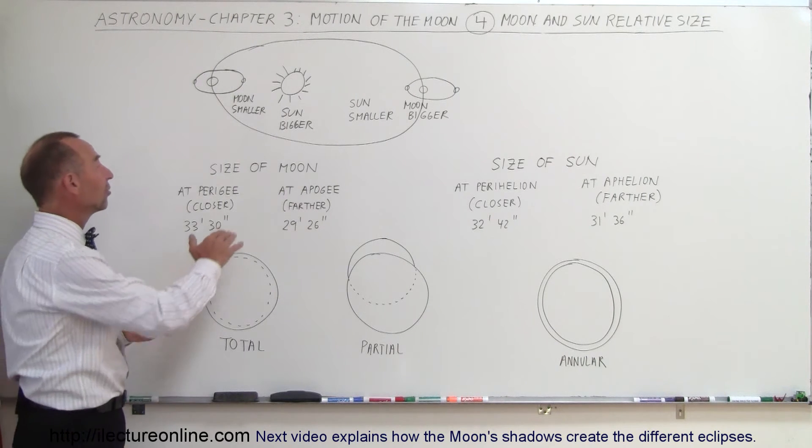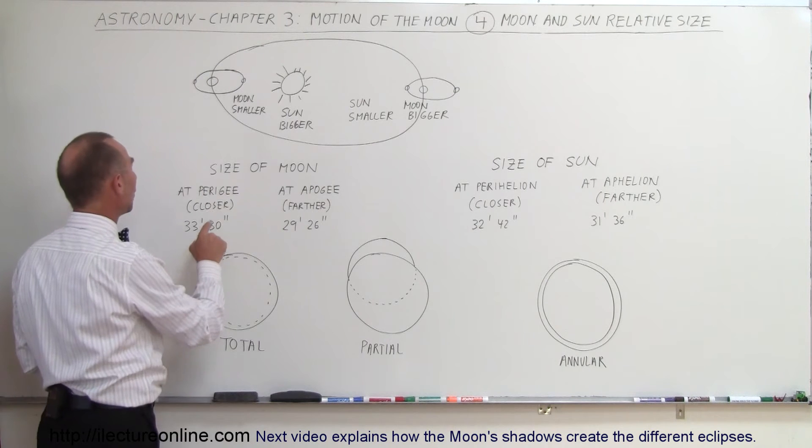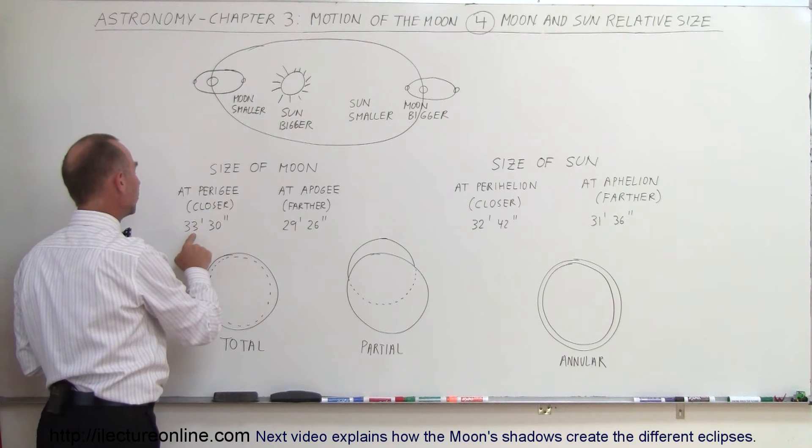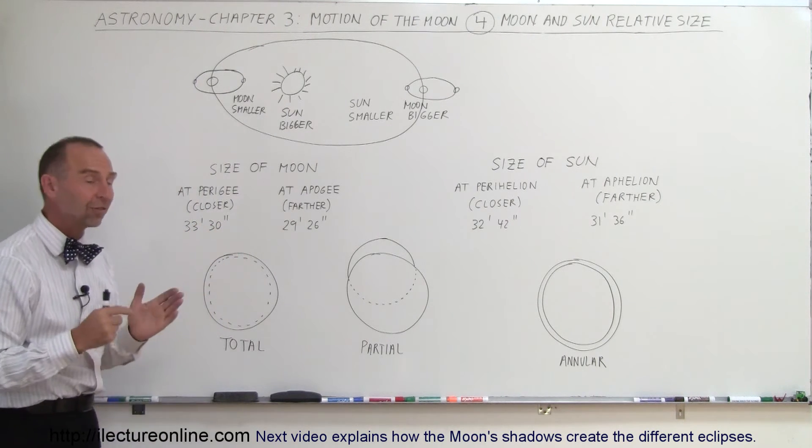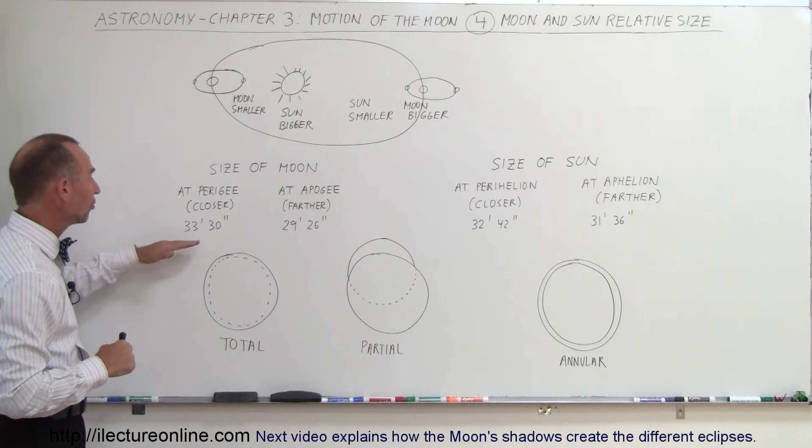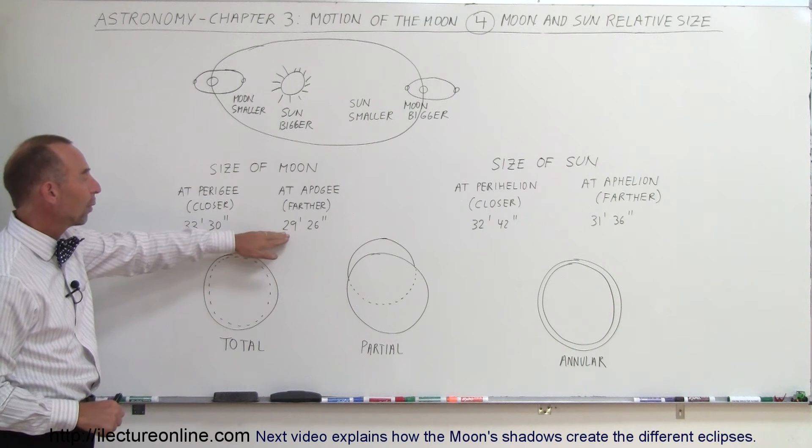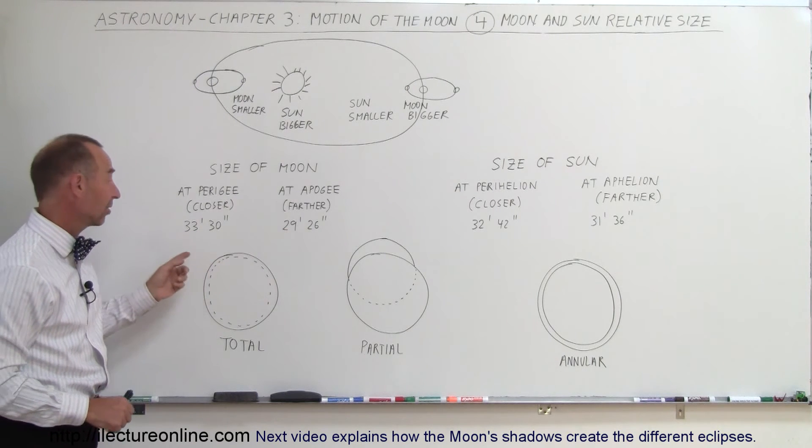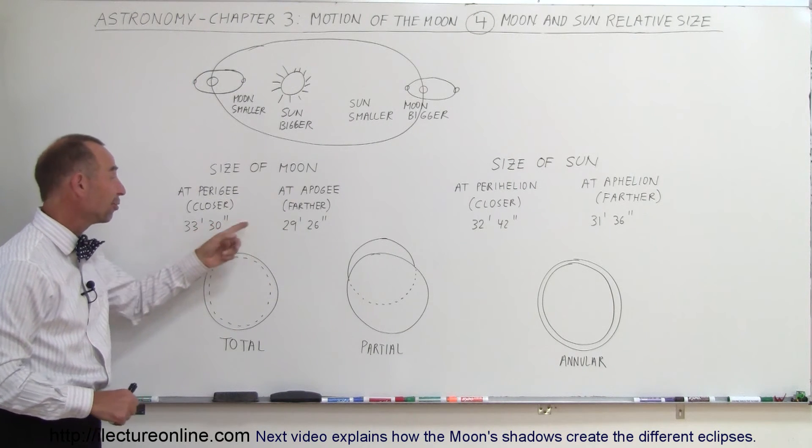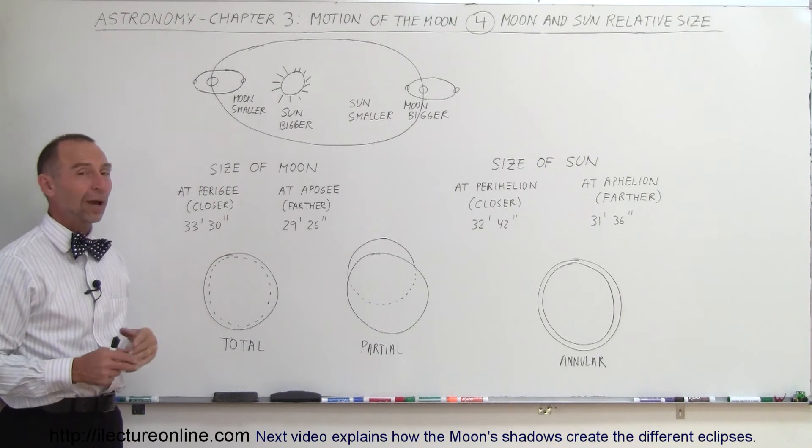So, as you can see, the size of the Moon can vary anywhere when it's at its closest position to be 33 minutes and 30 seconds in diameter, that's, of course, the angular size of the Moon, and at apogee, when it's farthest away, it's 29 minutes and 26 seconds. So you can see there's quite a bit of difference between the size of the Moon when it's closer and when it's farther away.